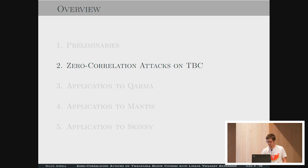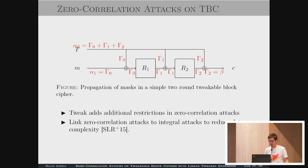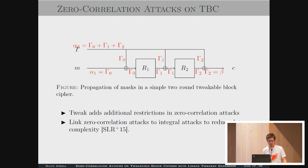How can we do that for tweakable block ciphers? For a very basic two-round tweakable block cipher, over the first XOR the masks have to be the same, and also from the other side. When we shift the masks into the tweak key schedule, over the branching points they all have to sum up, giving additional restrictions in the tweak key schedule. In our attacks, we also link the zero-correlation attacks to integral attacks to reduce the data complexity.